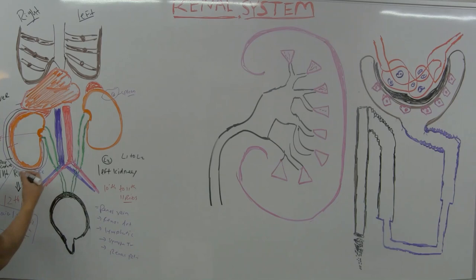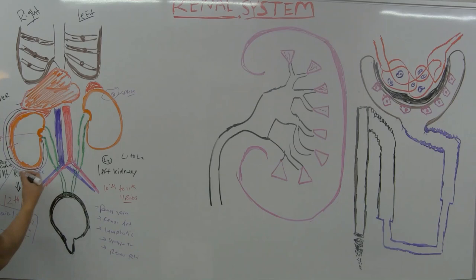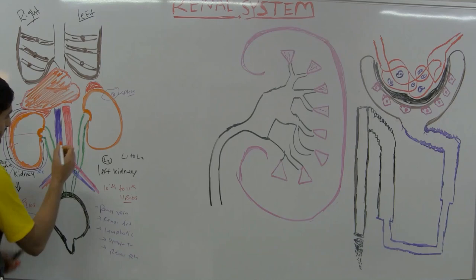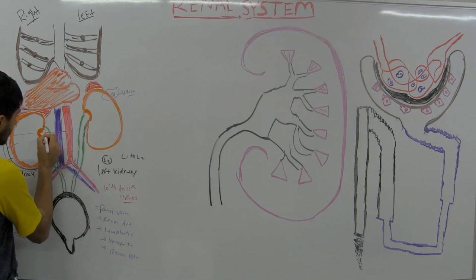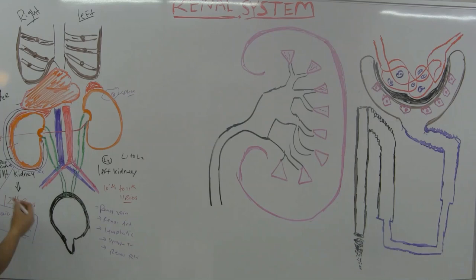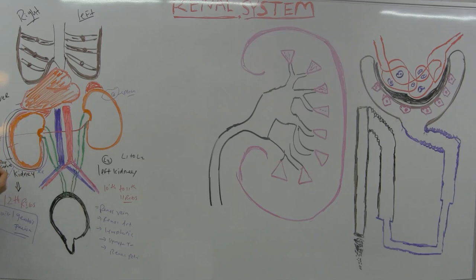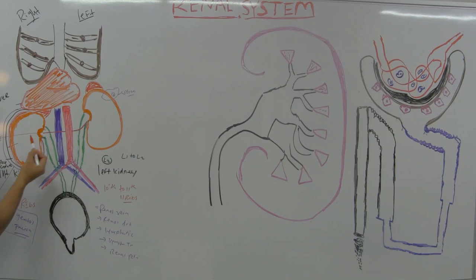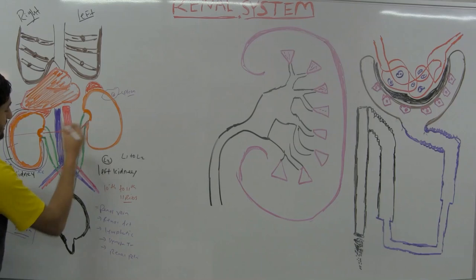At L2, the aorta gives a branch here — that's my renal artery. Looking at right versus left renal artery: the right renal artery is slightly longer than the left because it has to pass posterior to the inferior vena cava. The renal artery gives rise to five segmental arteries.